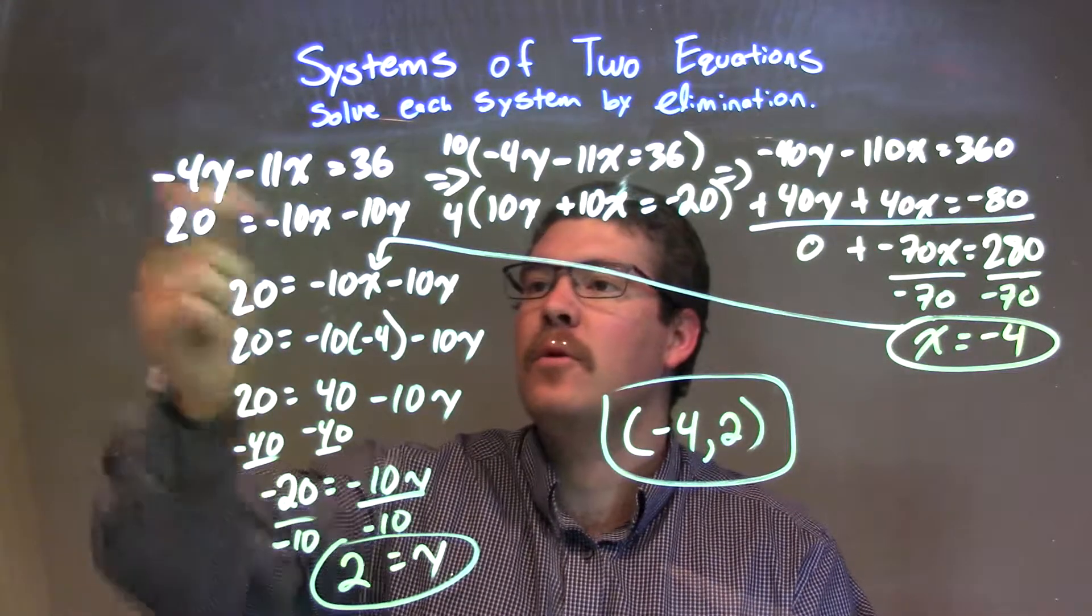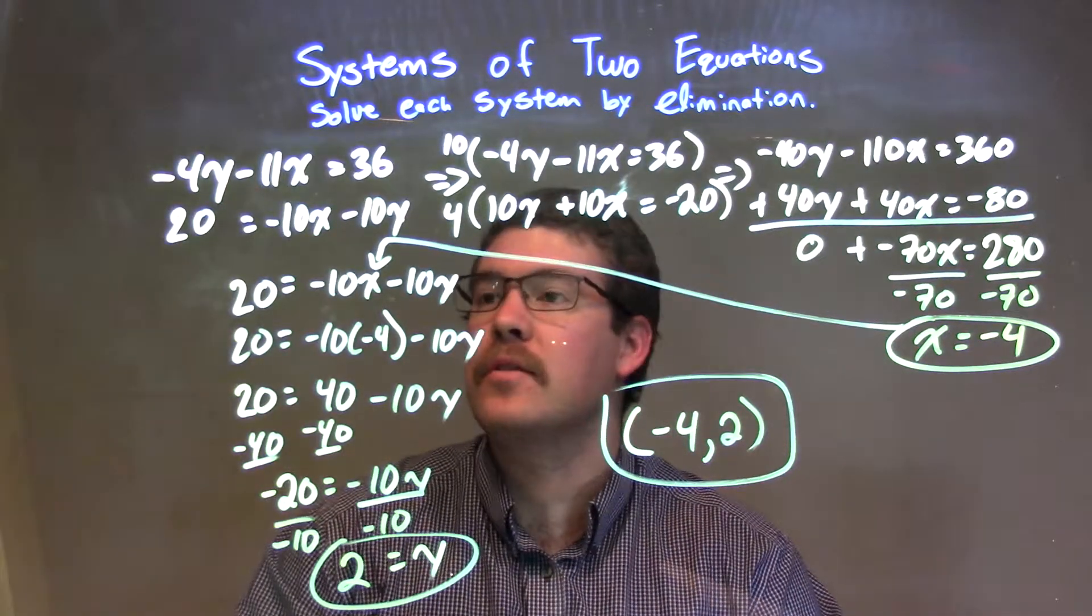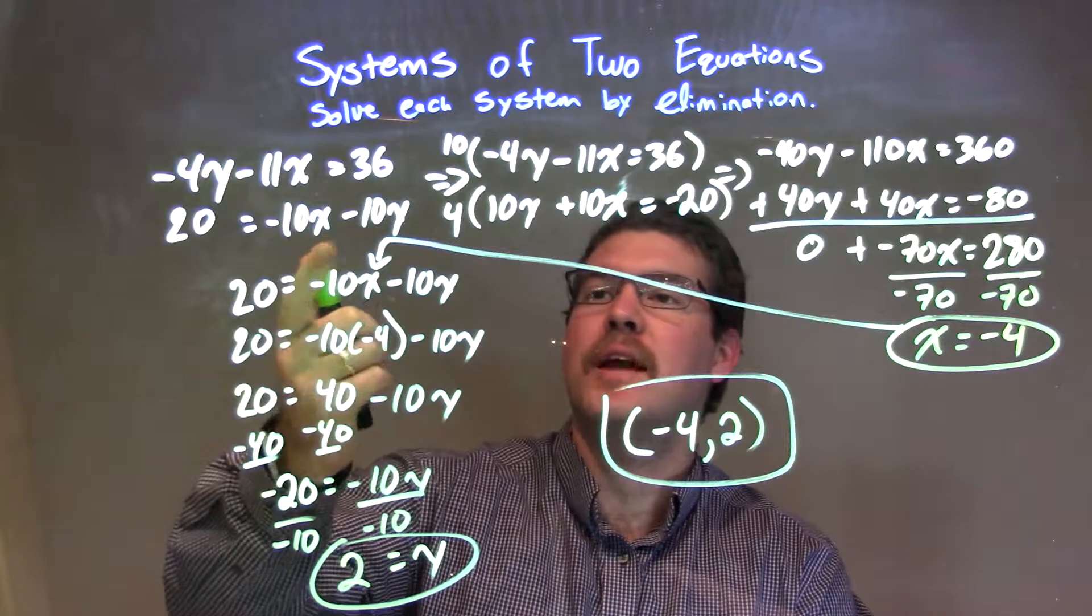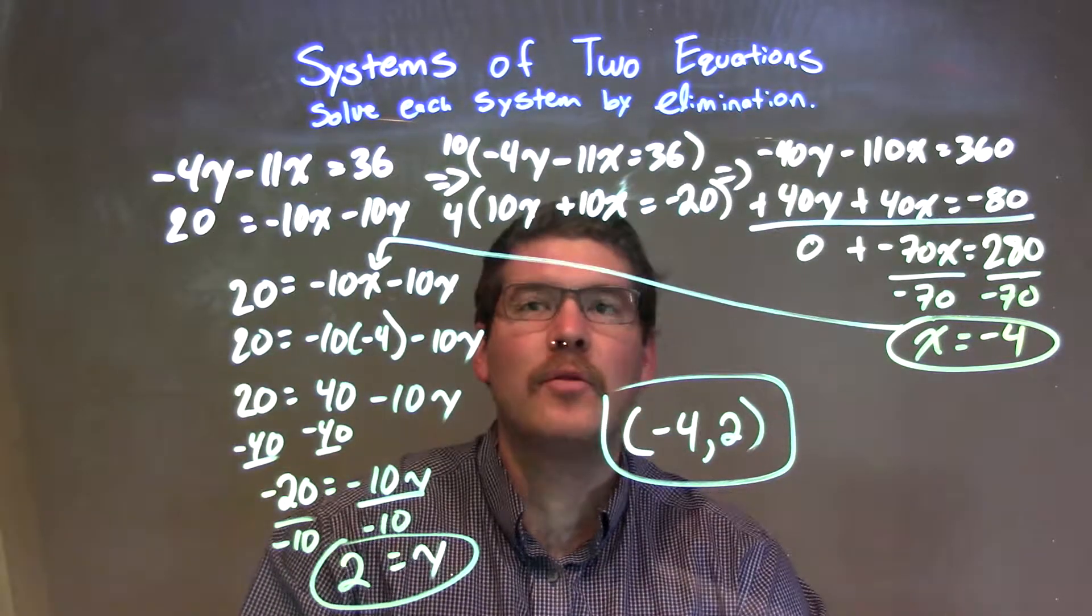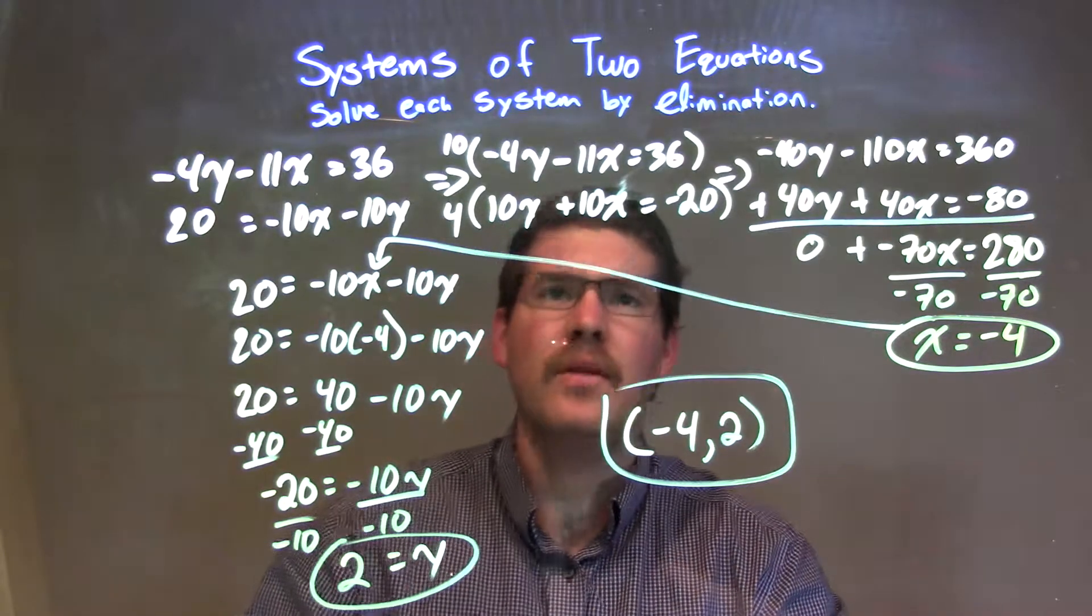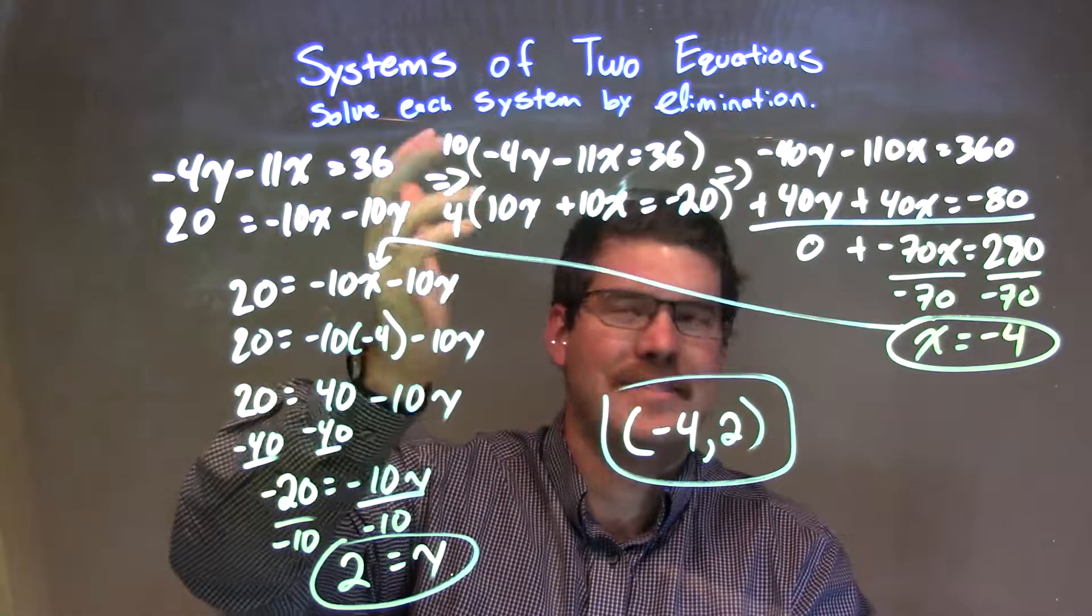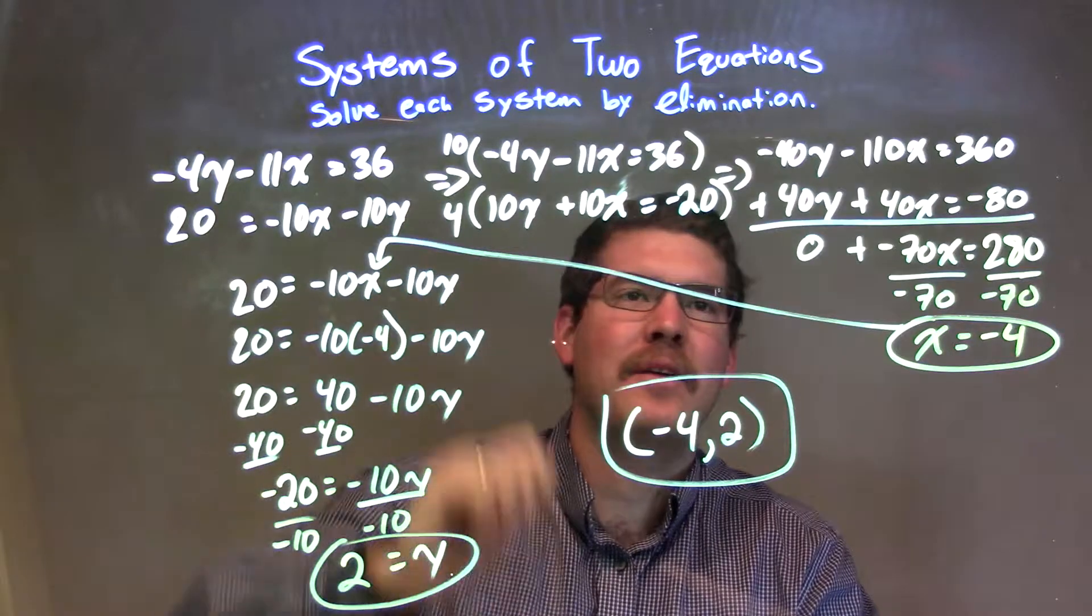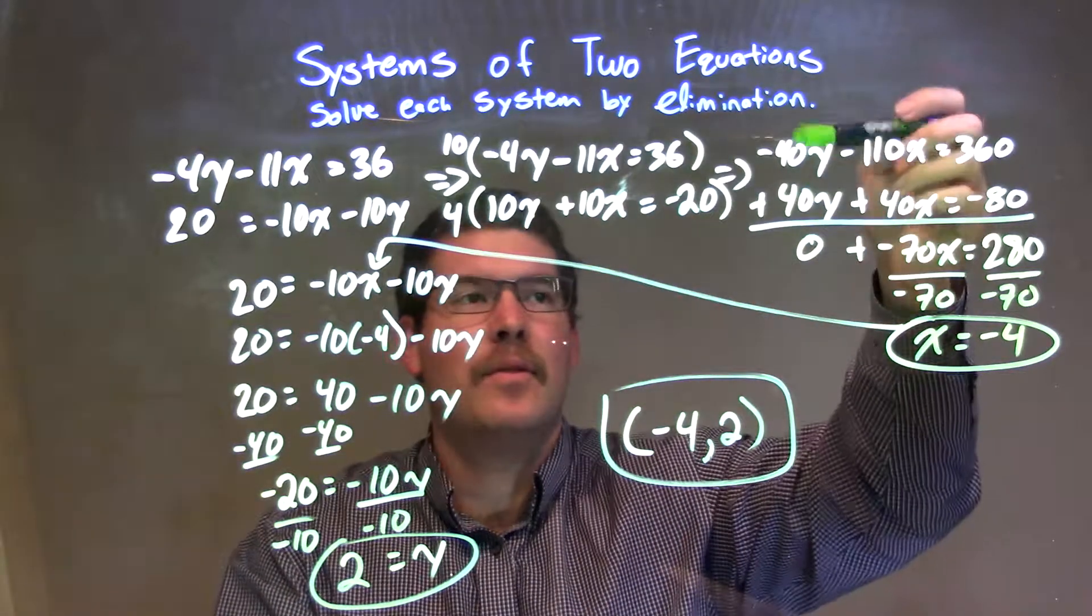We're given our two equations: negative 4y minus 11x equals 36, and 20 equals negative 10x minus 10y. I rewrote this so that it would all line up. Then I multiplied the top equation by 10, the bottom equation by 4, and that would set me up to eliminate the y variables.